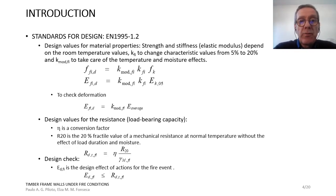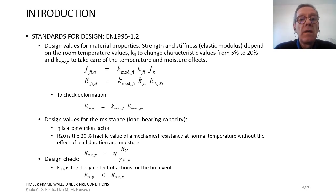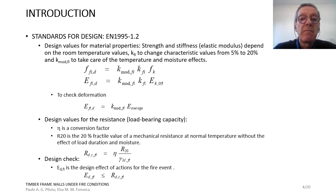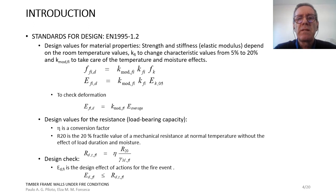For design in Europe, we need to use Eurocode 5 Part 1.2, taking care of material properties and the effect of temperature on those properties. Regarding the strength of material, we need to use coefficients KFI and KMOD,FI that multiply the strength value at room temperature, to account for changes in characteristic values from 5% to 20% and for temperature and moisture effects on the material.